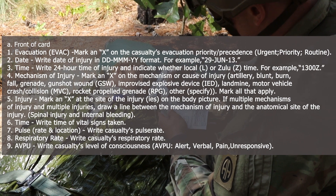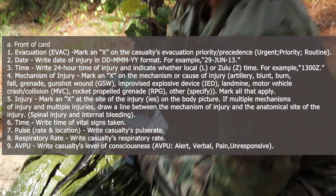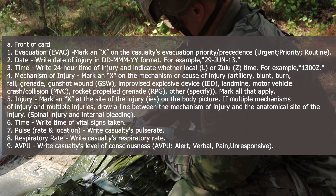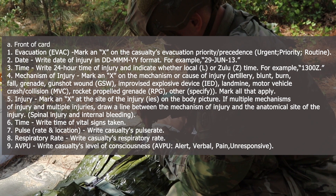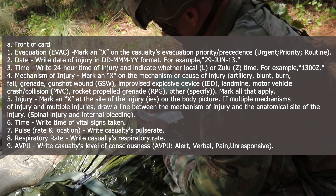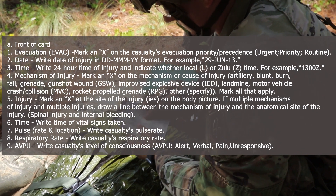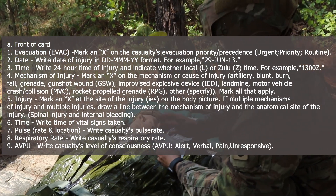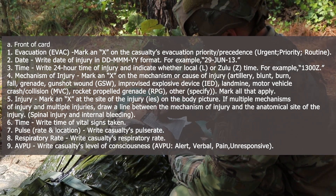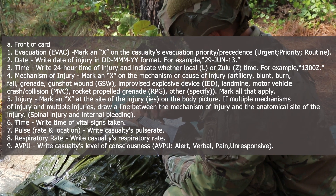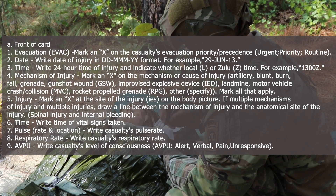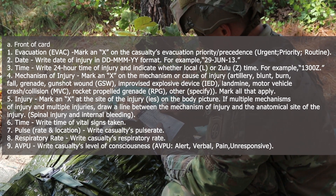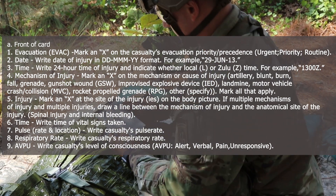Date: write the date of injury in day, month, year format — for example, 29 June 13. Time: write the 24-hour time of injury and indicate whether local or Zulu time — for example, 1300 Zulu. Mechanism of injury: mark an X on the mechanism or cause of injury. Time: write the time vital signs were taken. Injury: mark an X at the site of the injury on the body picture. If there are multiple mechanisms of injury and multiple injuries, draw a line between the mechanism of injury and the anatomical site of the injury.